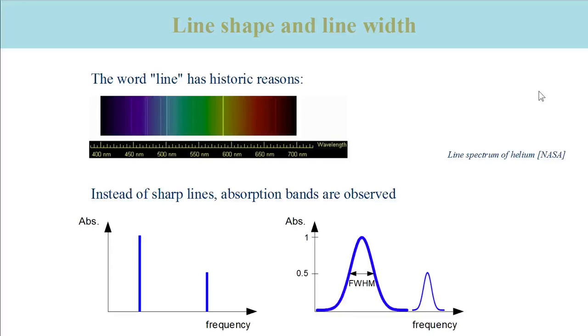The word line stems from the observation of relatively narrow bands in emission spectra of compounds that were heated in flames. The high temperature made several excited states occupied which relaxed under emission of photons. The color of the emitted light corresponded to the energy of the transition.